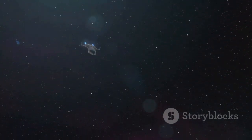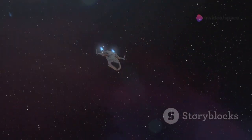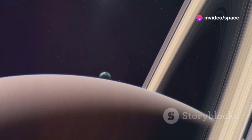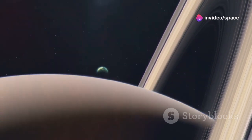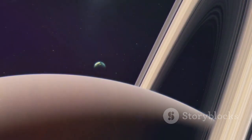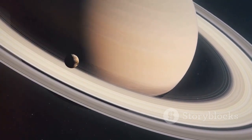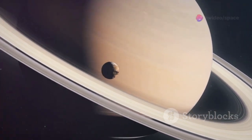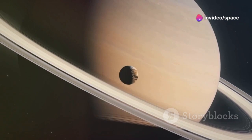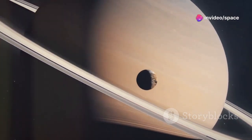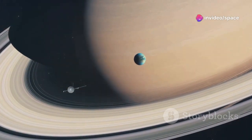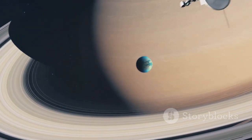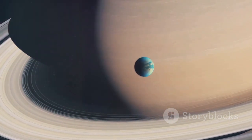Voyager 2's flyby of Saturn provided further insights into the planet's atmosphere and magnetic field. The probe also captured images of Saturn's moon Titan, revealing its thick, hazy atmosphere. These observations paved the way for future missions to Titan, including the Cassini-Huygens mission, which landed a probe on Titan's surface in 2005.